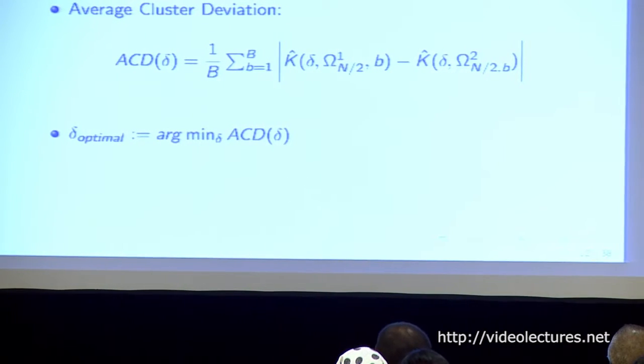The metric we propose is called average cluster deviation, abbreviated ACD, which is a function of delta. It is essentially the difference between two values of capital K, where capital K means the number of clusters. What we do is randomly split the data into two subsets, each containing equal sets of objects to be clustered. We then apply the TRUST algorithm with the same value of delta on each subset, record the number of clusters from both results, and make the difference. We believe a clustering algorithm with the right tuning parameter should deliver steady performance, so results from two random splits shouldn't differ much. We do multiple random splits, calculate an average — that is ACD. A delta with a small ACD value indicates better clustering stability.